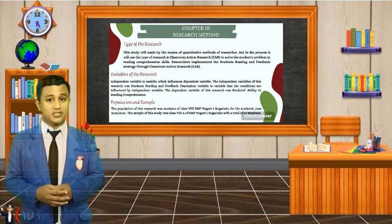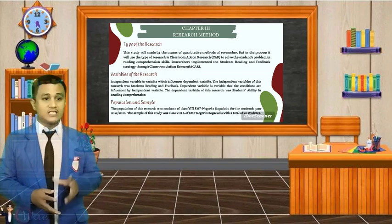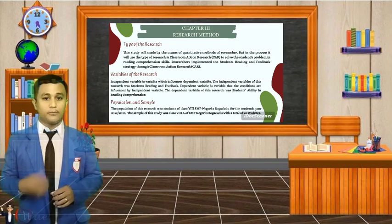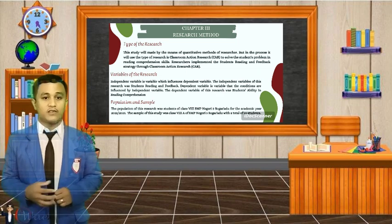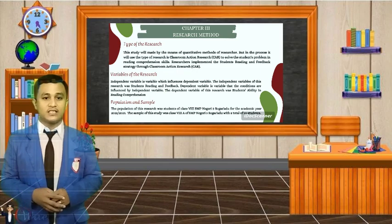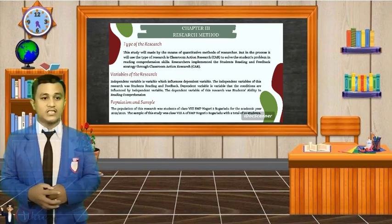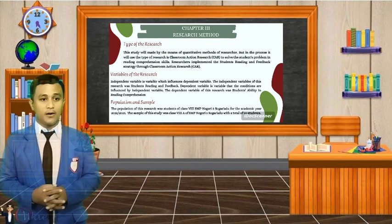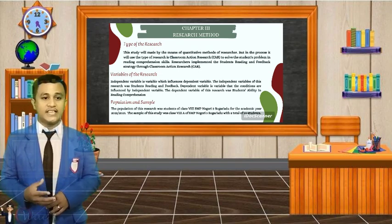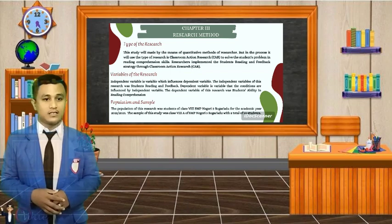Chapter 3, Research Method. Type of the research: This study was made by the main means of qualitative research, but in the process it will use the type of classroom action research to solve problems in reading comprehension skills. The research implements the students' reading and feedback strategy for classroom action research. Variable of the research: The independent variable is the variable that influences the dependent variable. The independent variable of this research is the reading and feedback strategy. The dependent variable is students' ability in reading comprehension.